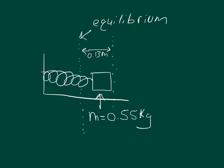The block is released from rest after the spring is stretched a distance of 0.13 meters. Indicate the direction with the sign of your answer. Assume that the positive direction is to the right. Part A: at that instant find the force on the block. Part B: at that instant find its acceleration.